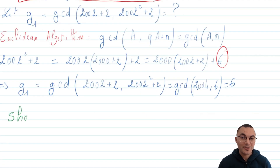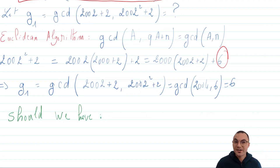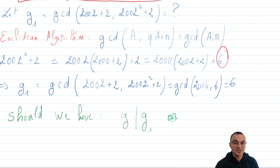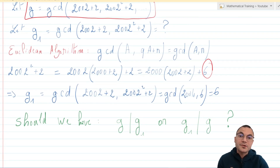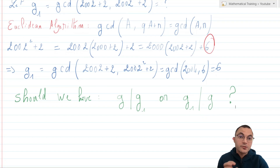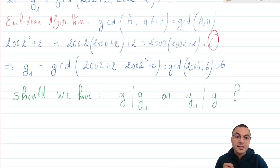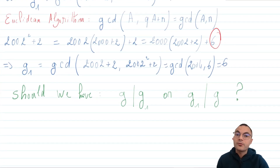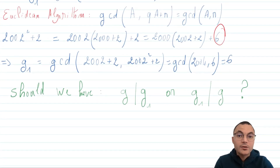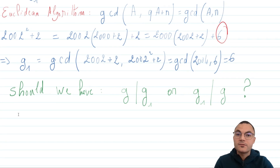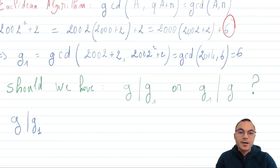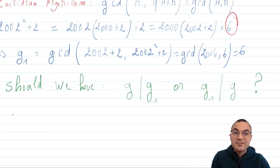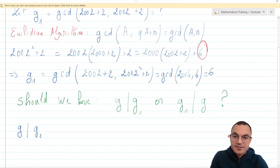Take a moment to think about this. Does G divide G1, or does G1 divide G? Intuitively speaking, there are more constraints on G than on G1, because G divides an infinite number of terms, but G1 only divides the first two integers in this sequence. So G divides G1, which is 6.